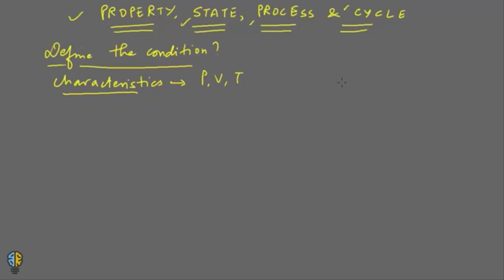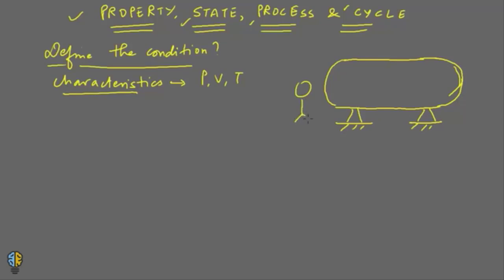Let's say you have a boiler. You are an engineer taking care of this system, and your shift is only till 5 PM. There are various gauges on this boiler — the first gauge shows the pressure, the second shows the temperature, and the third shows the volume. These gauges are there to describe how we define the condition of a system and what its characteristics are.